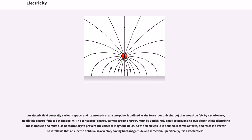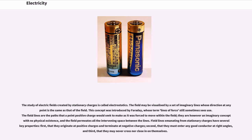An electric field generally varies in space, and its strength at any one point is defined as the force per unit charge that would be felt by a stationary, negligible charge if placed at that point. The conceptual charge, termed a test charge, must be vanishingly small to prevent its own electric field disturbing the main field and must also be stationary to prevent the effect of magnetic fields. As the electric field is defined in terms of force, and force is a vector, so it follows that an electric field is also a vector, having both magnitude and direction. Specifically, it is a vector field. The study of electric fields created by stationary charges is called electrostatics.